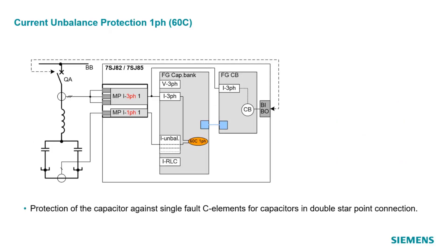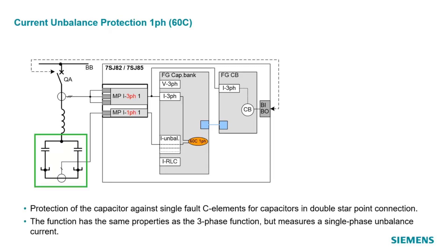The single-phase unbalanced protection protects the capacitor against single faulty capacitor elements for capacitors in double star point connection. The function has the same properties as the three-phase function we saw before, but measures a single-phase unbalanced current.